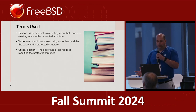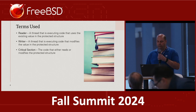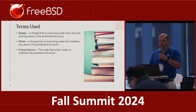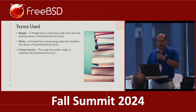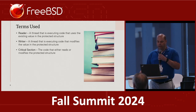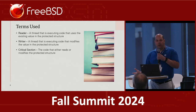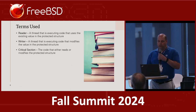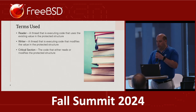We'll be using some terms that most of you should be familiar with. We'll be talking about reader threads — that's a thread executing code that's trying to read existing values in a protected data structure. A writer is a thread that's going to be modifying those data structures, and a critical section is the section of code that's running that's protected by the lock.